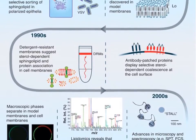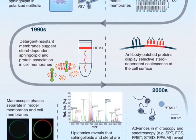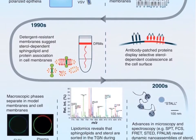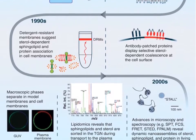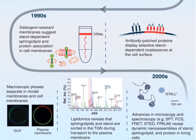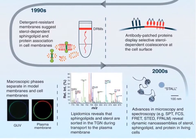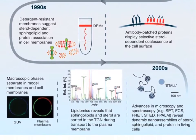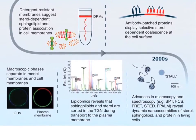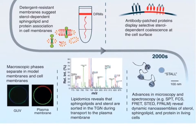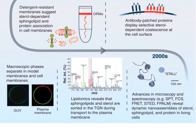However, further works led to a major modification of this model. It suggests that the lipids and proteins are not distributed randomly, but are sequestered in small domains known as lipid rafts.